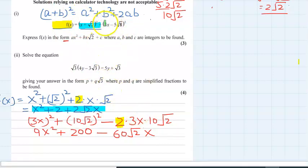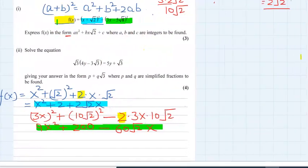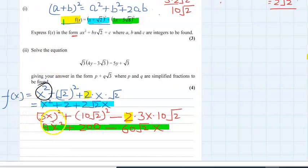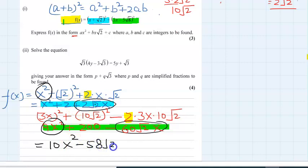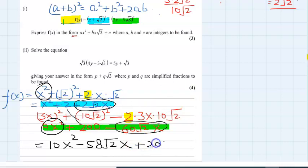There is a positive sign between the two parts, so we add them. x² + 9x² = 10x². For the √2·x terms: +2√2·x - 60√2·x = (2 - 60)√2·x = -58√2·x. The remaining constants are 2 + 200 = 202. So the result is 10x² - 58√2·x + 202.